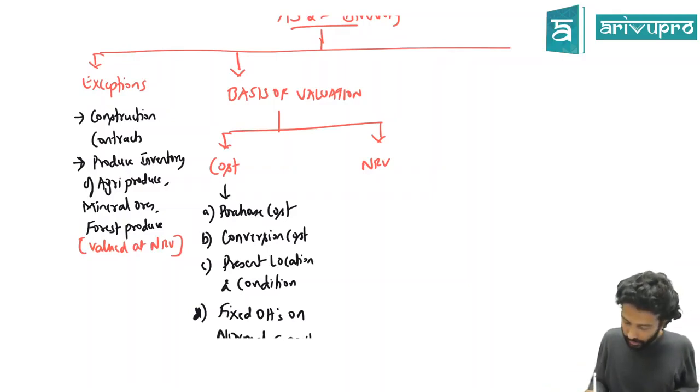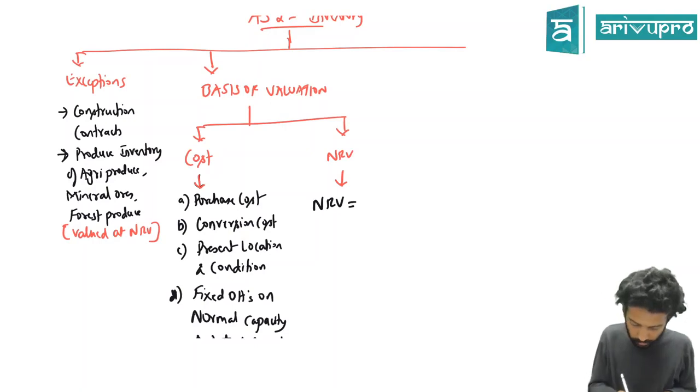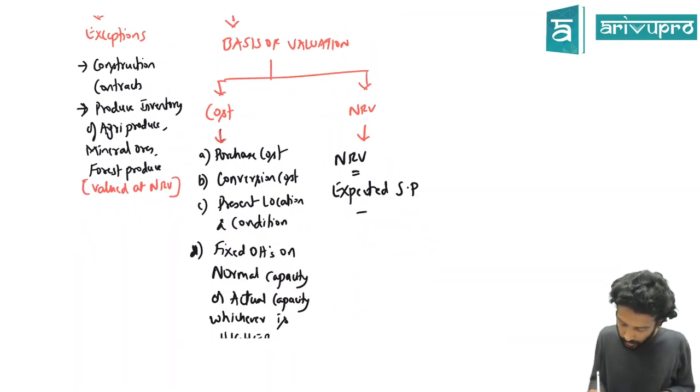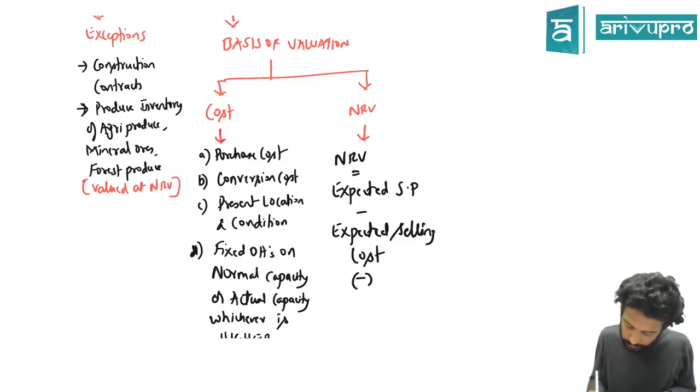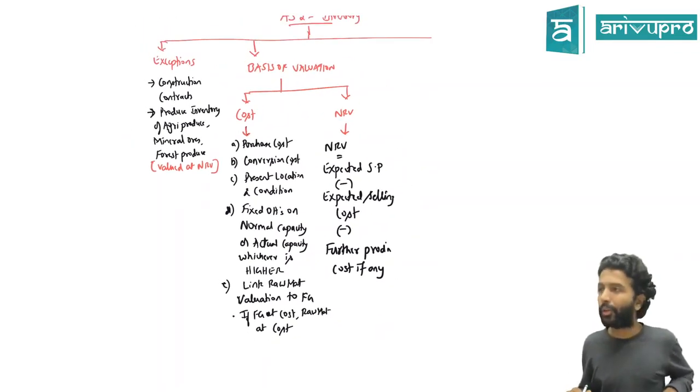How should the NRV be valued at? How do you get NRV? NRV is equal to expected selling price, can I write SP, minus expected selling cost minus further production cost if any. This further production cost will be applicable for partly finished goods that only will further produce, hence is only applicable for WIPs.